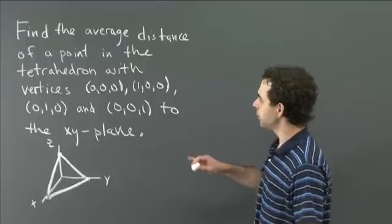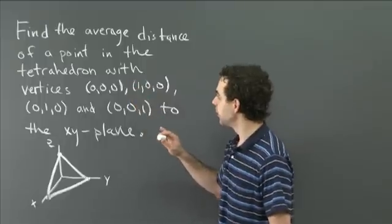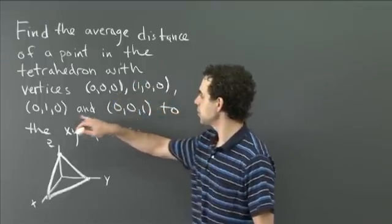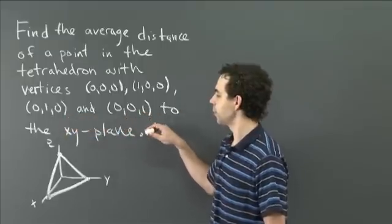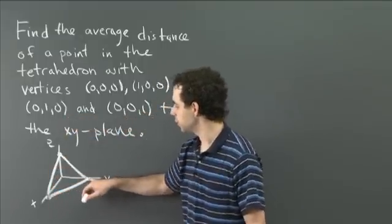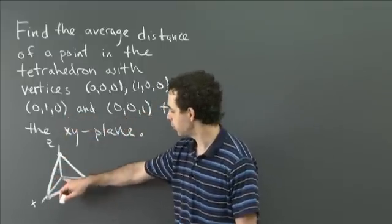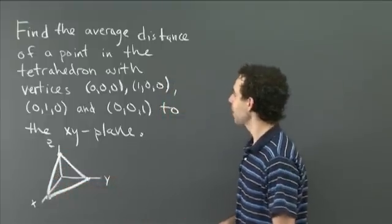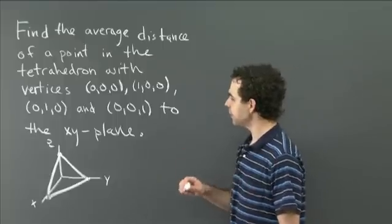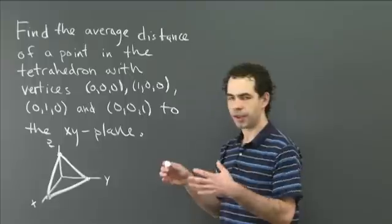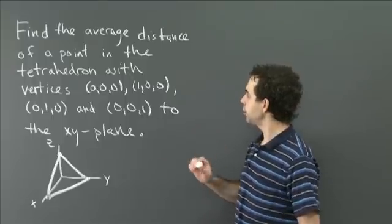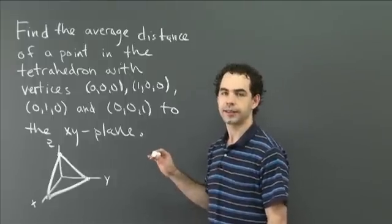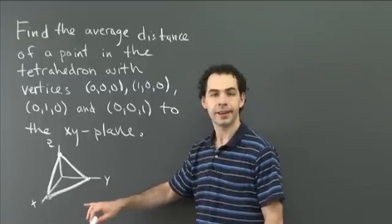What I'd like you to do is consider the tetrahedron that has vertices at the origin and at the points (1,0,0), (0,1,0), and (0,0,1). So that's one point on each of the positive axes, a distance 1 from the origin. I've taken the liberty of drawing it here for you. Consider that solid tetrahedron.